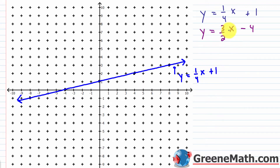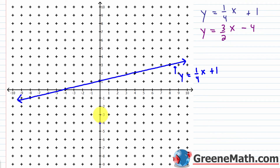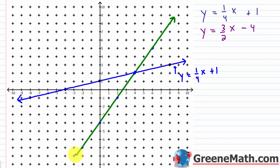The graph of y equals one-fourth x plus 1 is drawn. For y equals three-halves x minus 4: the y-intercept is at (0, -4) and the slope is three-halves, so go up 3 to the right 2. You can already see the point of intersection appearing as you plot points.